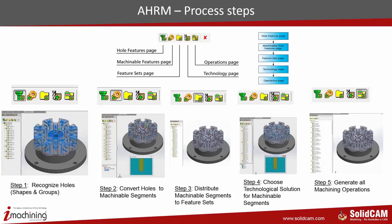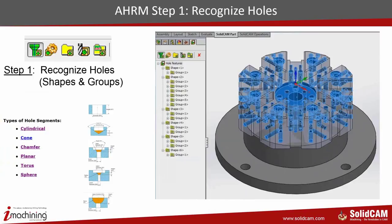What exactly are feature sets? You have holes coming onto a part in different directions. Each feature set is basically taking all of the holes from all of the different areas and breaking them up into their proper machinable position. Each feature set is a different machinable position. Then it chooses the technology and creates the operations.